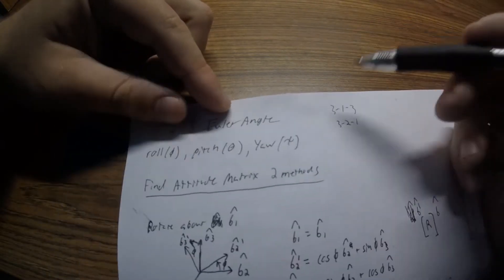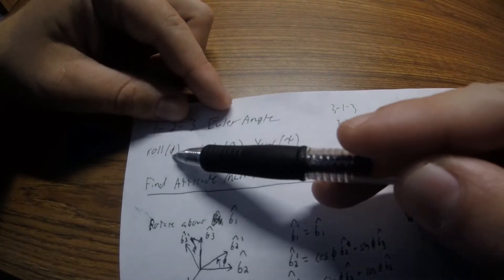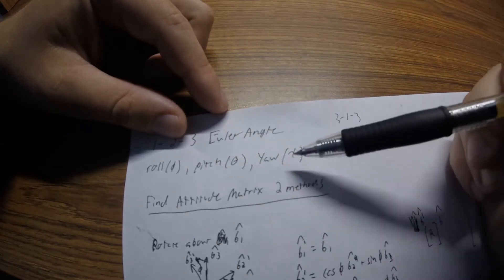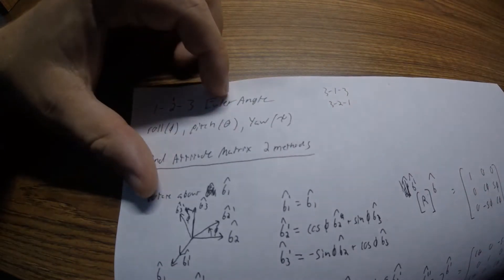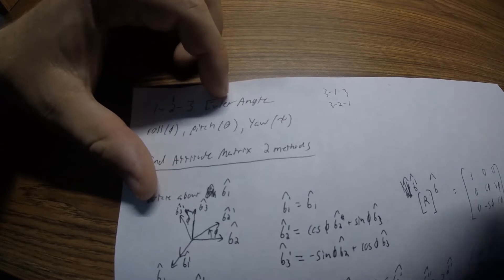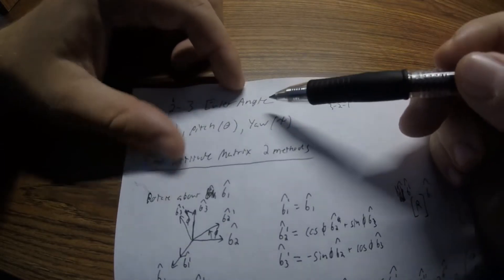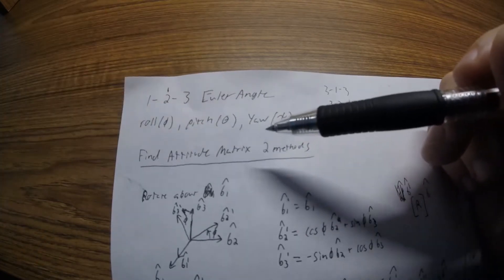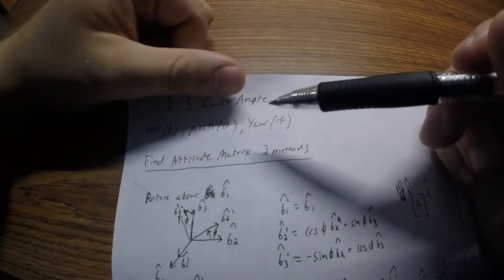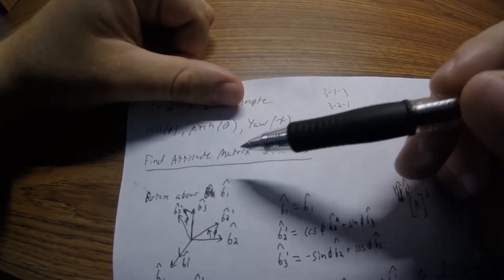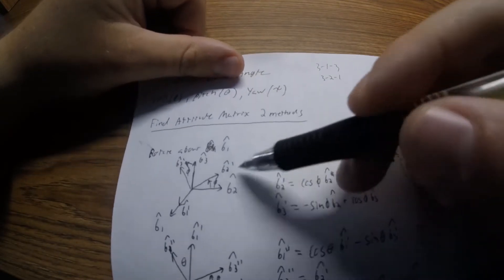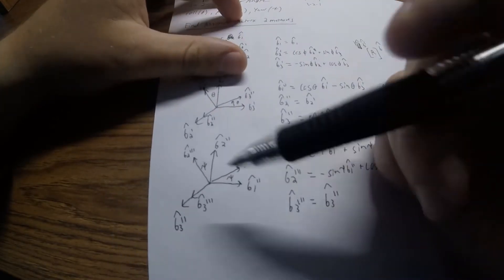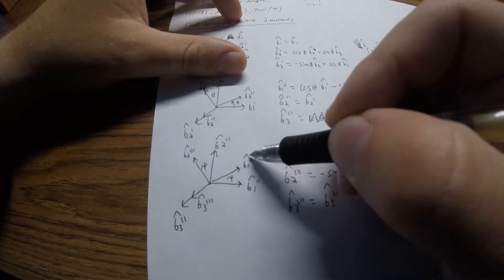My angle convention is roll-pitch-yaw, denoted by phi, theta, and psi. If you want to know more about Euler angle rotations and what the attitude matrix means, you can look at the resources. Basically what we're trying to do here is start with an initial frame, which we're going to call B, and then a final frame, which we're going to call B triple prime.